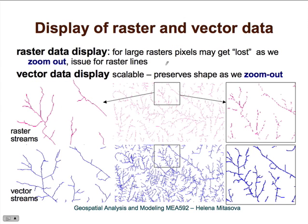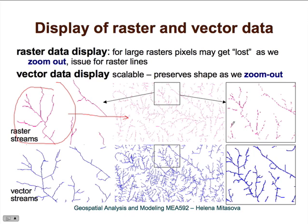Here is a zoom-in of streams represented as raster. These streams are part of a very large dataset with thousands of rows and columns. When we zoom out to display the full dataset, you can see that the stream network essentially falls apart because some of the pixels are not displayed. You can see there are missing pieces — there is a big chunk missing here. This is because we don't have all the pixels displayed.